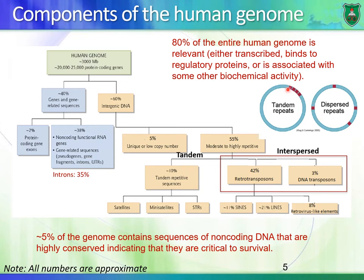You can have the same exact sequence repeated one after the other within the same region. 5% of the human genome contains sequences that are non-coding, meaning they are not transcribed, yet they are highly conserved — you can see the same or highly similar sequences in other organisms like primates, chimpanzees, and mice. This means these sequences are really important, but we don't know what their functions are.